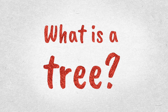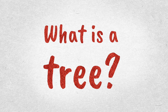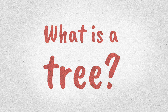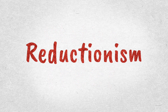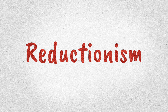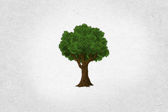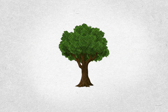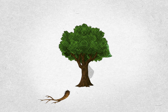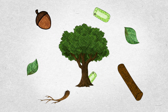To understand things, one approach is to reduce them down to their smallest parts — an approach known as reductionism. Reductionism relies on the idea that we can fully understand all properties of something if we understand all of the smaller parts that make it up.